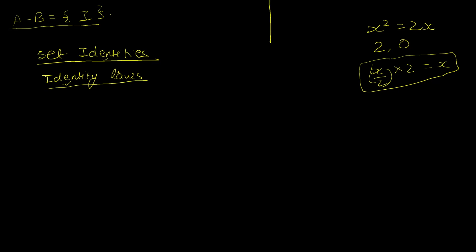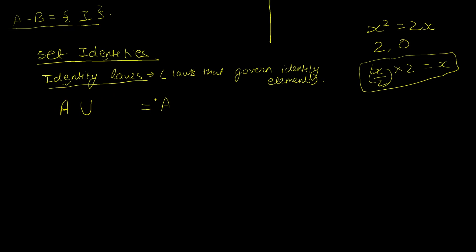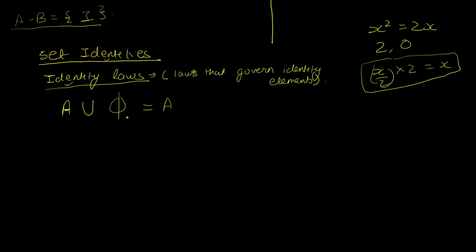The first set of laws are called the identity laws. An identity element is one which, when applied under a given operation, returns the same input. For union, the identity element is the empty set φ, because A union φ equals A. For intersection, the identity element is the universal set U, because A intersection U equals A.